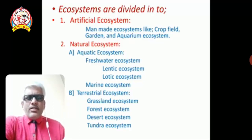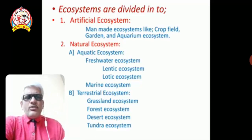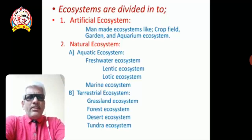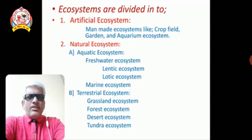Natural ecosystems are divided based on habitat into two types: aquatic ecosystems and terrestrial ecosystems. Aquatic ecosystems occur in water and are divided into freshwater ecosystems and marine ecosystems. The freshwater ecosystem is further divided into lentic ecosystems — meaning standing water, such as ponds, pools, lakes, and ditches — and lotic ecosystems, meaning running or flowing water, such as rivers, streams, and waterfalls.